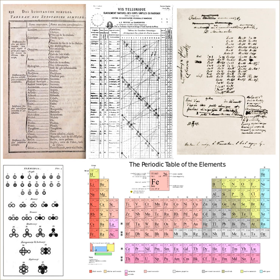In 1815, the English physician and chemist William Prout noticed that atomic weights seemed to be multiples of that of hydrogen.